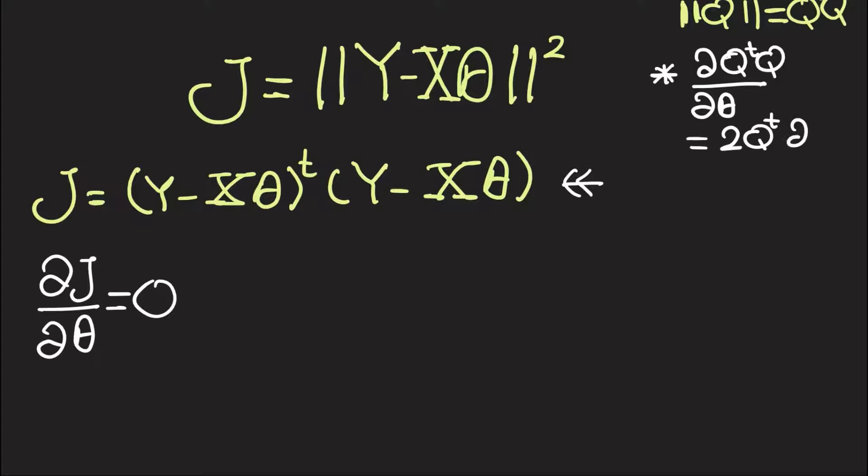So here we're going to have 2(Y - X theta) transpose multiplied by the partial derivative of (Y - X theta) with respect to theta.